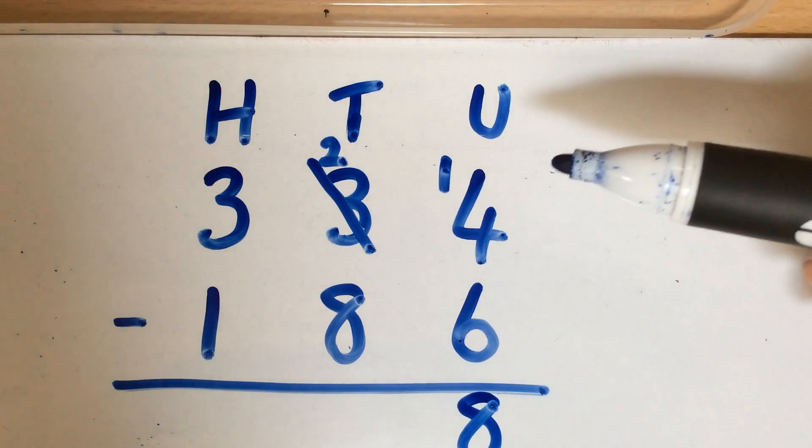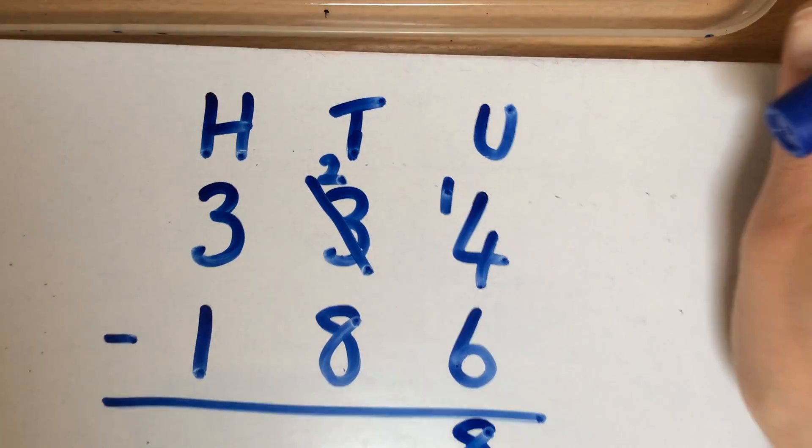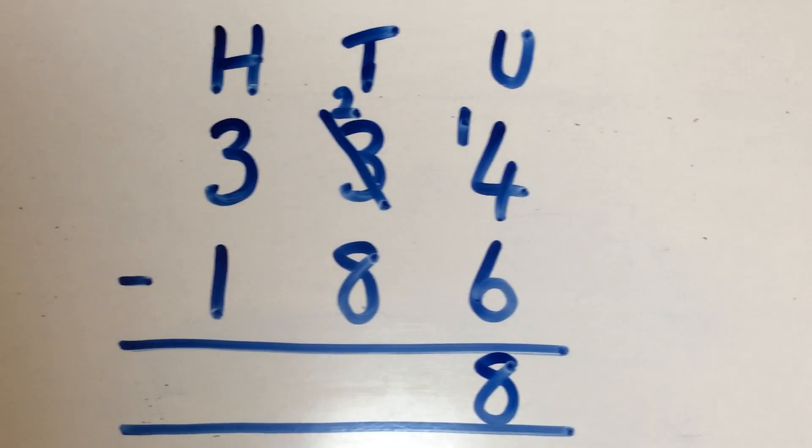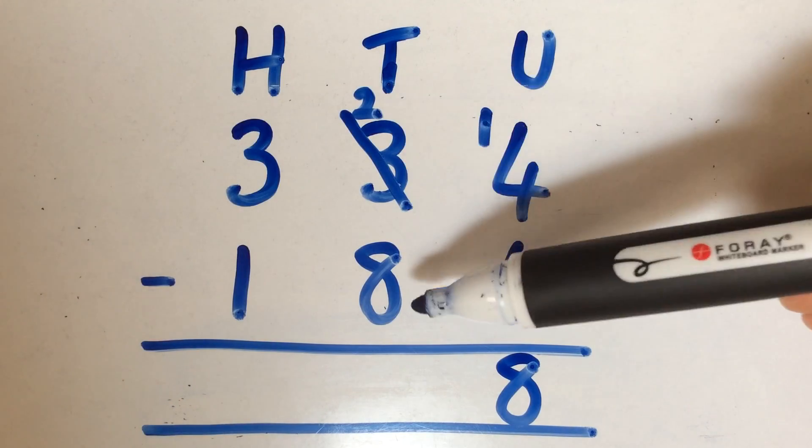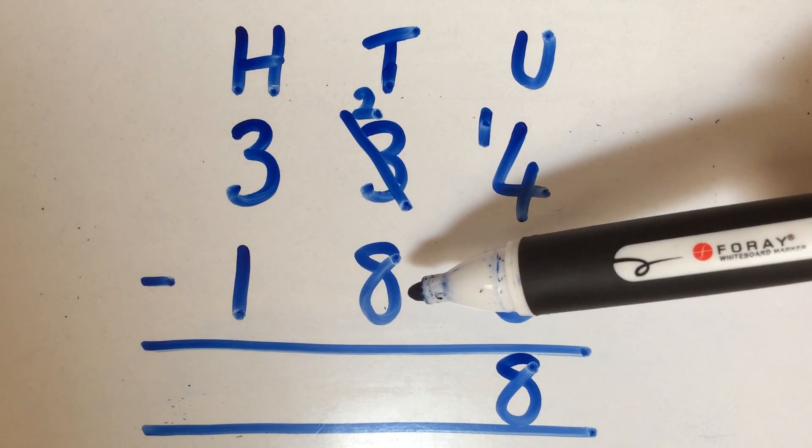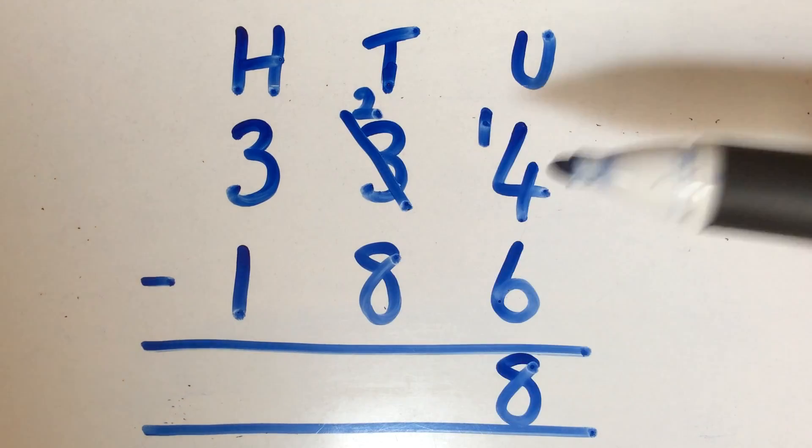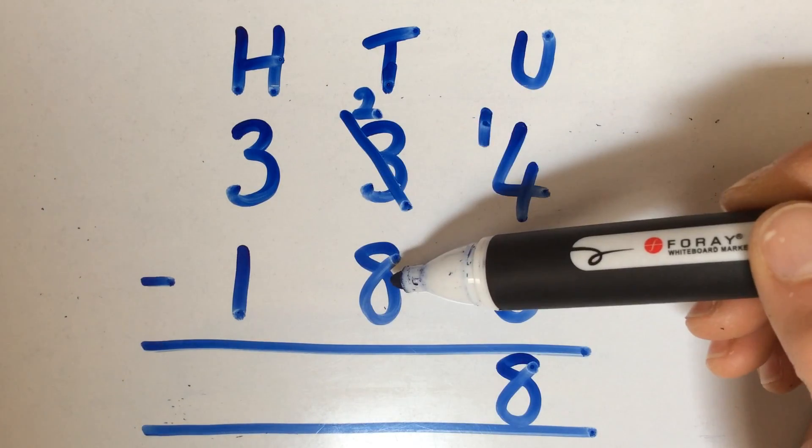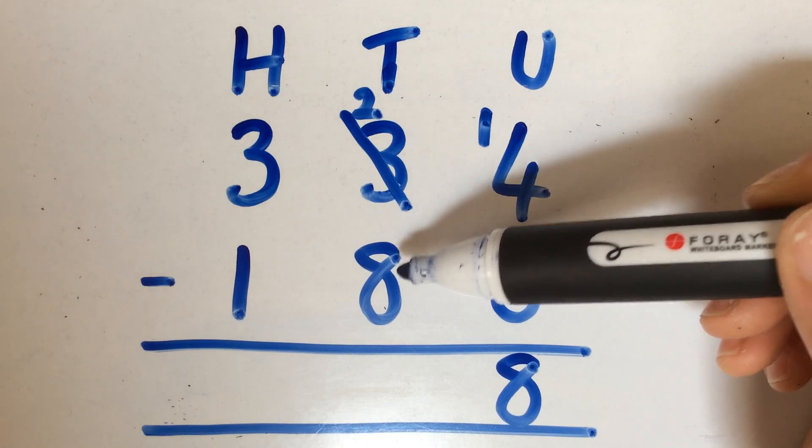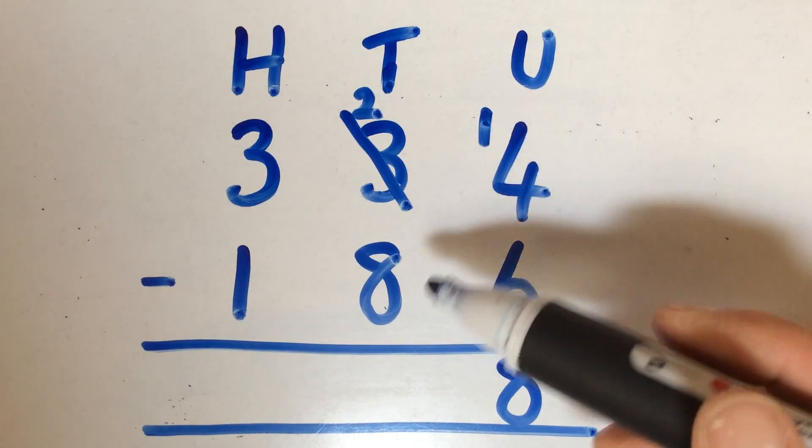If we then work our way across to the tens column, we've got 2 lots of 10 take away 8 lots of 10. So again, some children might make the mistake, well, we've got 8 take away 2 and write a 6 down. But again, 2 take away 8, that's what we are actually aiming to do. We can't do 20 take away 80, or 2 take away 8 lots of 10. So we've got to borrow again. We're going to the next column.